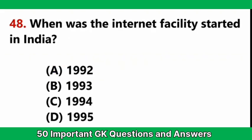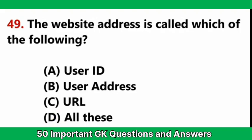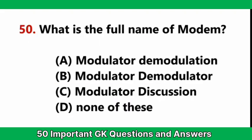When was the internet facility started in India? — Answer D: 1995. The website address is called which of the following? — Answer C: URL. What is the full name of modem? — Answer B: Modulator Demodulator.